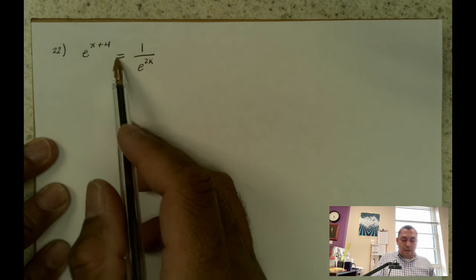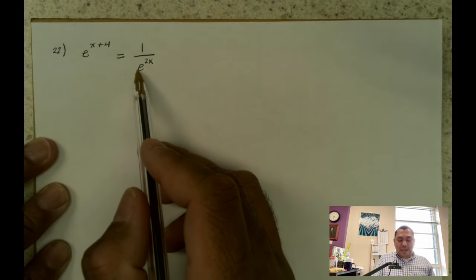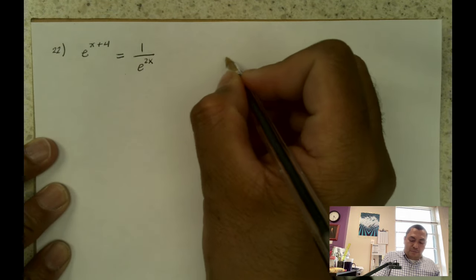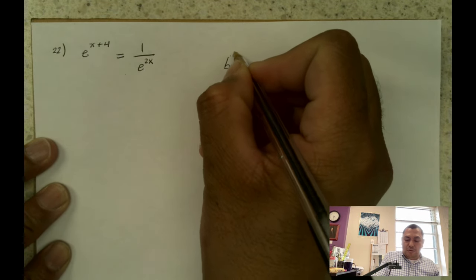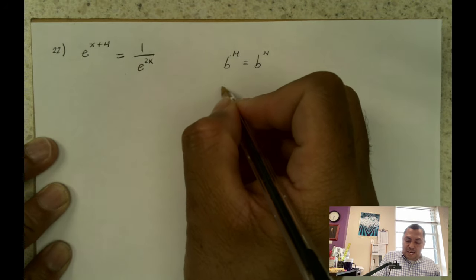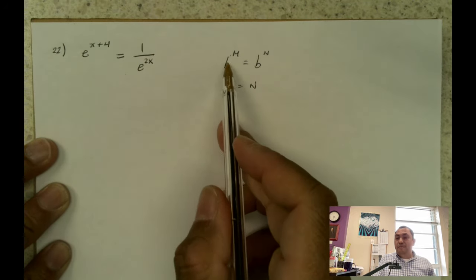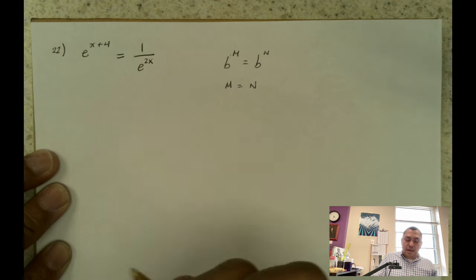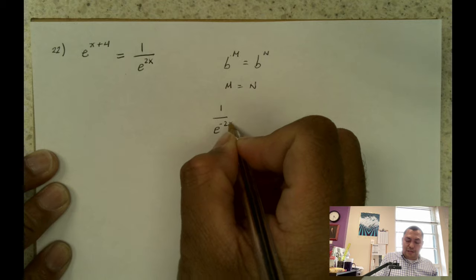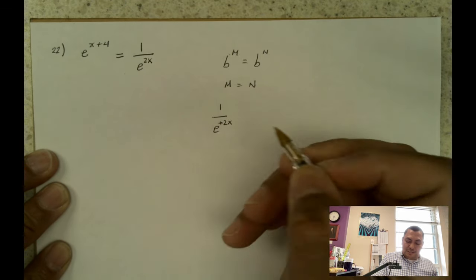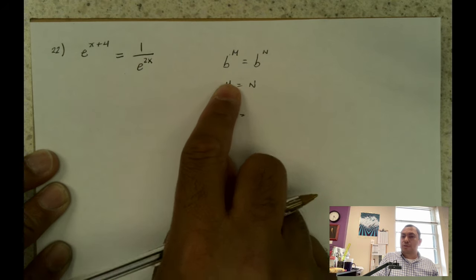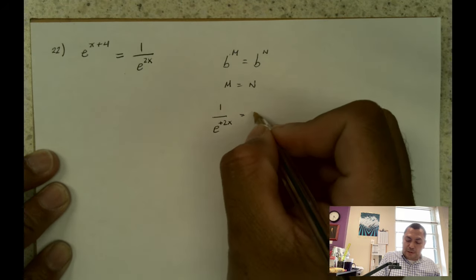Now the next problem is problem number 22. It's another exponential problem: e to the x plus 4 equals to 1 over e to the 2x. We are still trying to apply the property where b to the m equals to b to the n, so that m equals to n, if we get the bases the same. So what I'm going to do is a little manipulation here — I have e to the negative 2x on the numerator side.